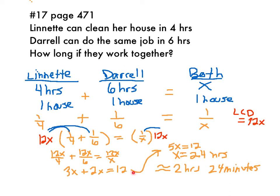Simplify the left-hand side — you're left with 5x equal to 12. Divide both sides by 5. x is equal to 2.4 hours, which if you leave it like that, I am fine with. If you take it one step further, that's okay too. 0.4 hours is the same as about 24 minutes.